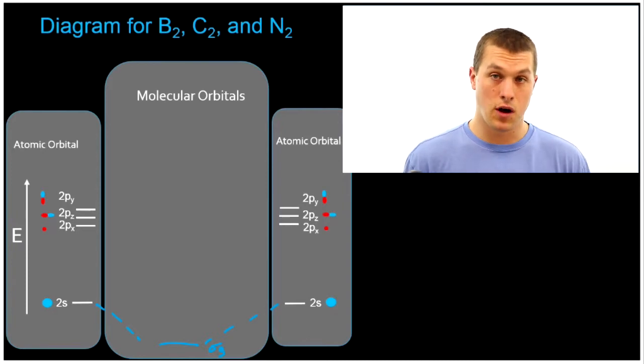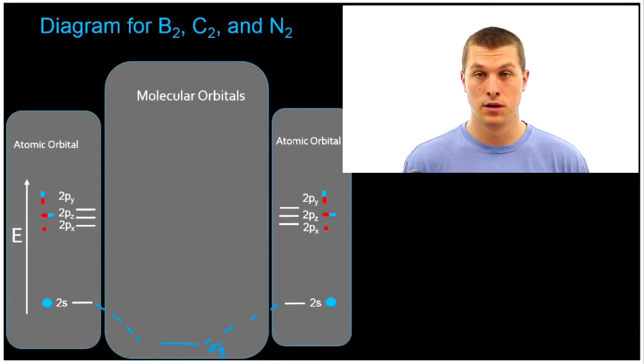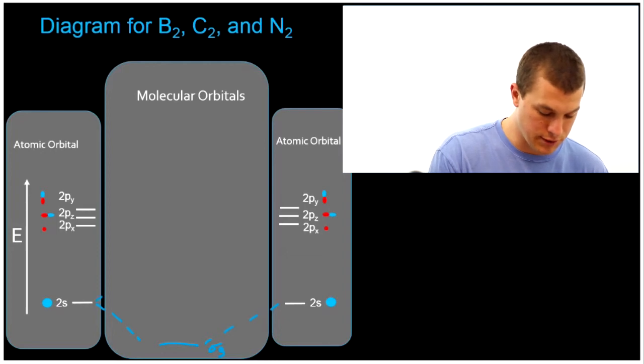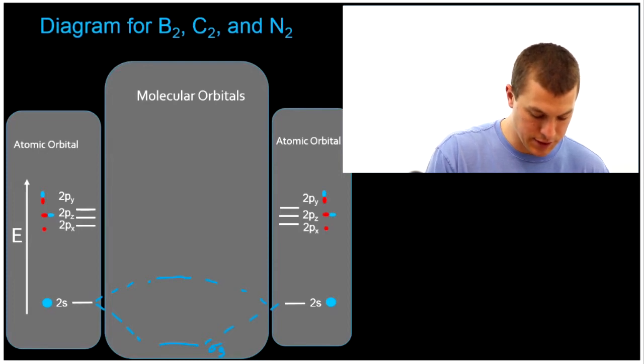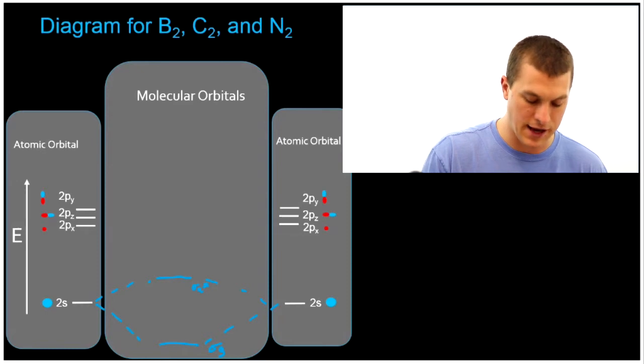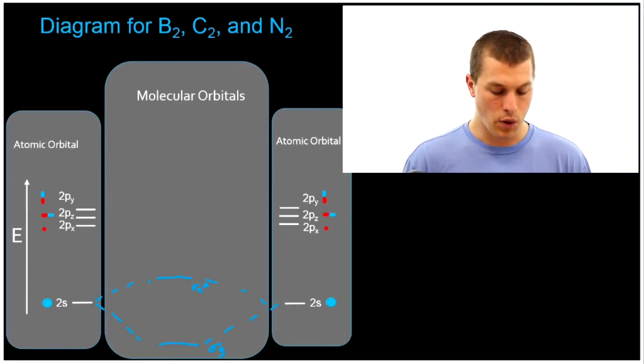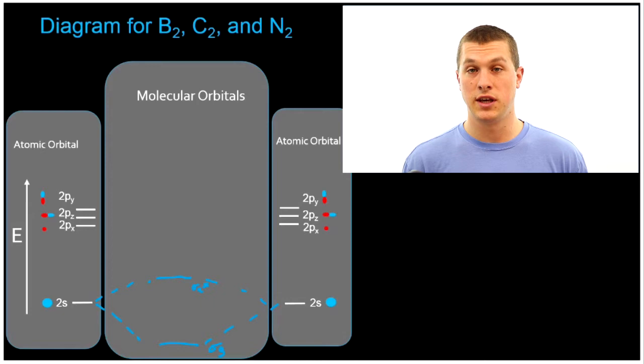Like I said, the 2s orbitals can also, when they approach each other, have destructive interference. That is, they have opposite phases, and that causes destructive interference, and that increases their energy relative to the original orbitals. And the way we label that one is with a sigma still, because it's still actually a sigma-type bond, and then a U, and then an asterisk. The U stands for ungerade. So, that's the two molecular orbitals we get from our 2s atomic orbitals.